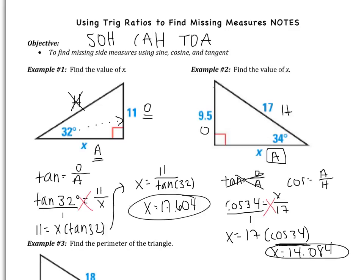And I like to just do a little mental check. Does that make sense? So in our figure, x is 14.084. Well, we notice that that's less than the hypotenuse. So that's a good sign. So our answer does make sense.